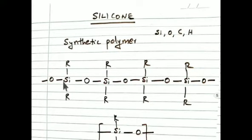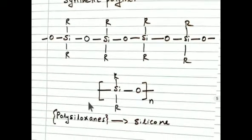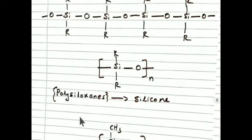The general formula is this repeated chain, where R is an alkyl group. Here we can see carbon and hydrogen. This one is written in polymer form. We can call it polysiloxane. Polysiloxane is called silicone.